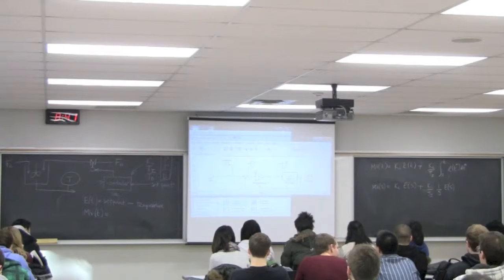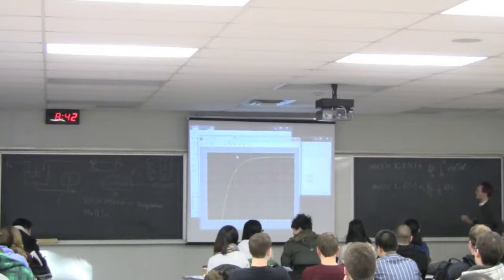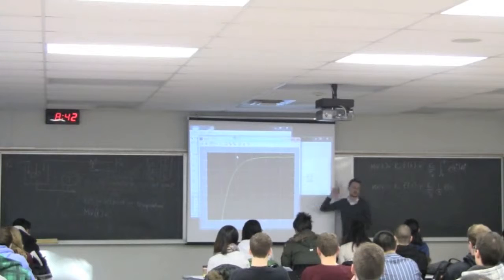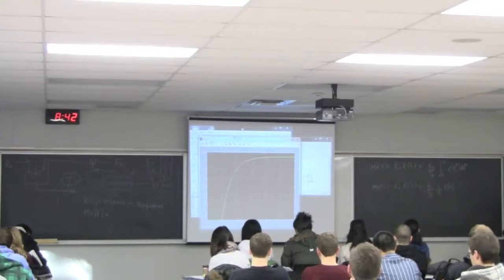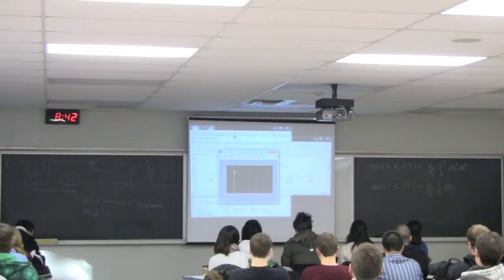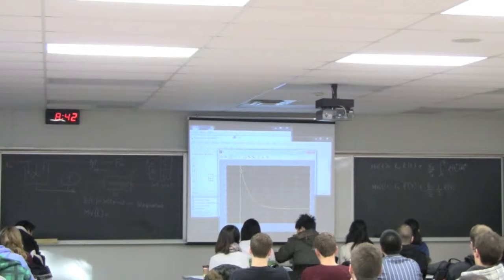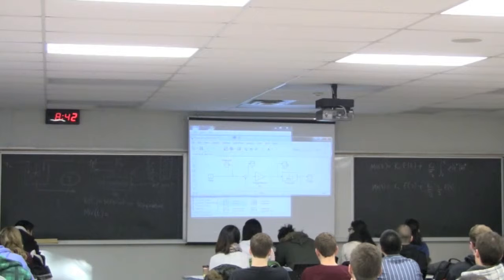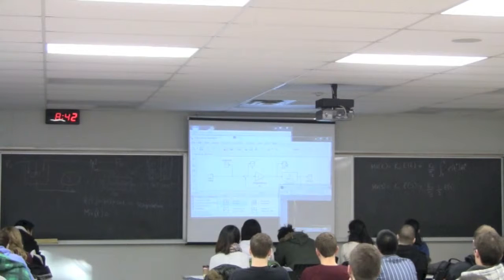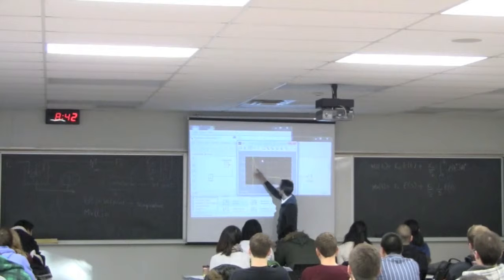So we're going to simulate the first-order process under proportional-only feedback control. There's the output as expected, with the step input at time 10. Stepping at time 10, making a unit step, and we're not reaching 1 — which we expect, since for a proportional-only controller we won't reach the set point. Looking at the set point — a step at time 10 from 0 to 1 — and the error signal: at time 10 we get a large error, and then it tapers off.